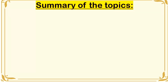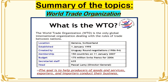To summarize the topics about the World Trade Organization: the WTO is the only global international organization dealing with the rules of trade between nations. Its location is in Geneva, Switzerland, and it was established on January 1, 1995. It was created by the Uruguay Round Negotiations from 1986 to 1994. Membership was 150 countries as of January 11, 2007, but now it is 160 countries. The budget is 175 million Swiss francs for 2006, with 635 people working there. The Director General is Pascal Lamy. The goal is to help producers of goods and services, exporters and importers, conduct their business.